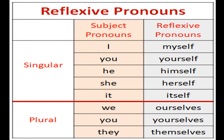Here are reflexive pronouns in both singular and plural forms. Singular: 'I' → myself; 'you' → yourself; 'he' → himself; 'she' → herself; 'it' → itself. These words must be remembered. In the plural form: 'we' → ourselves; 'you' → yourselves; 'they' → themselves. These are the examples of reflexive pronouns.